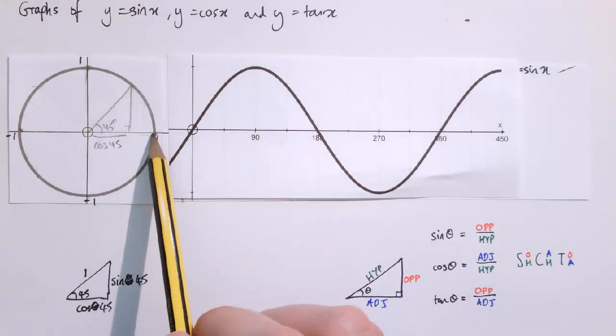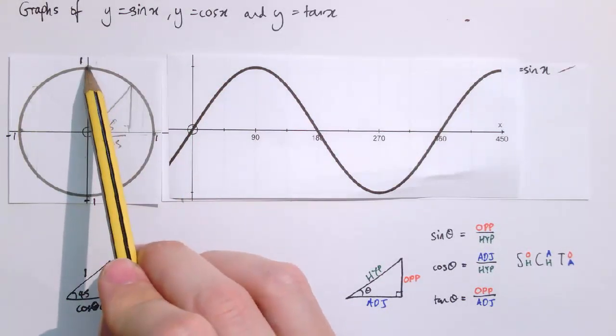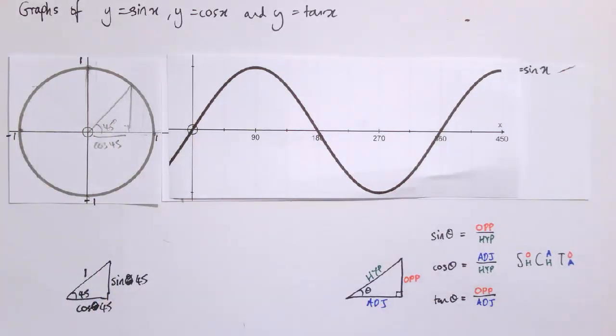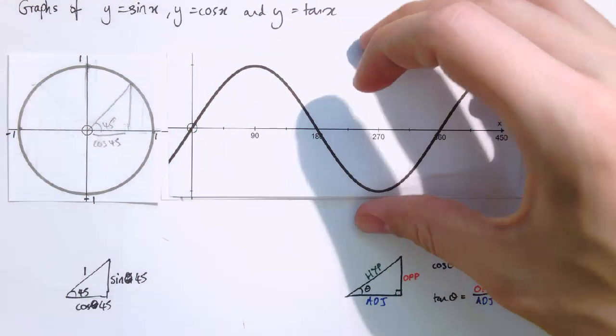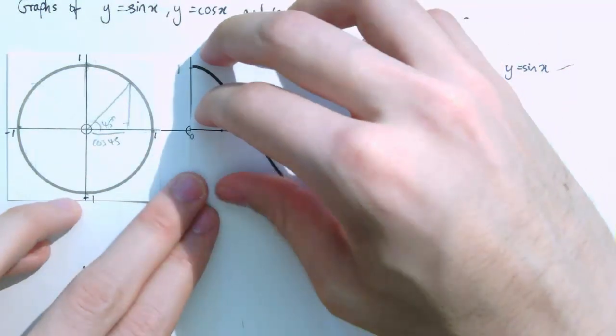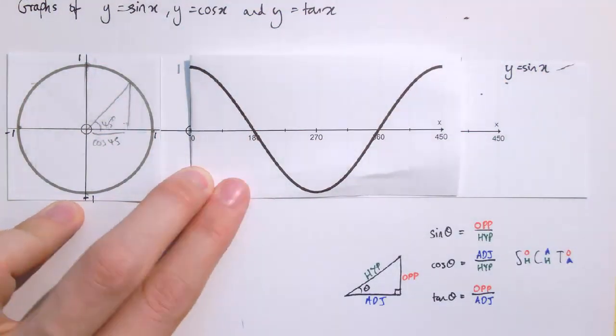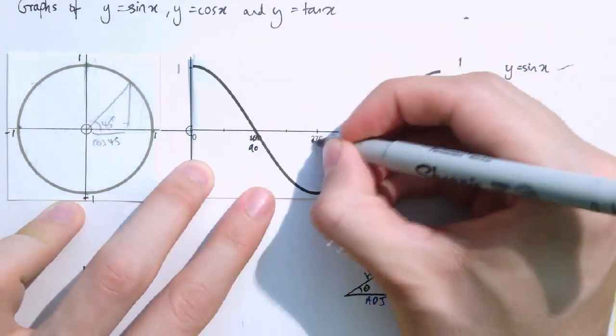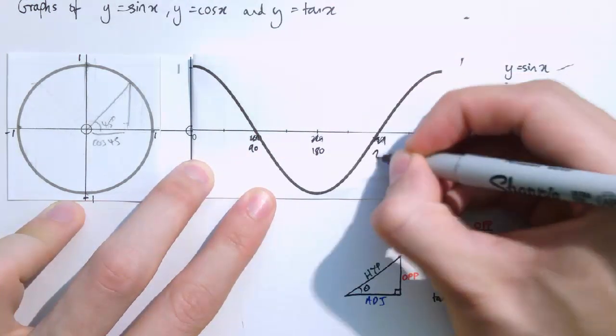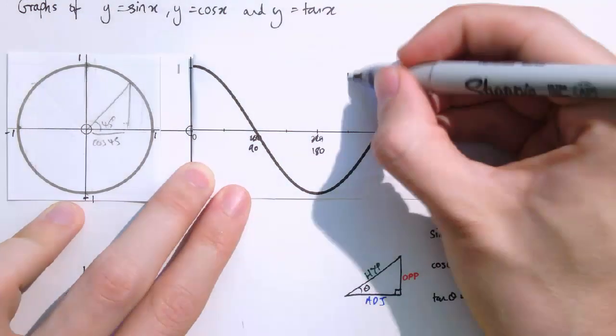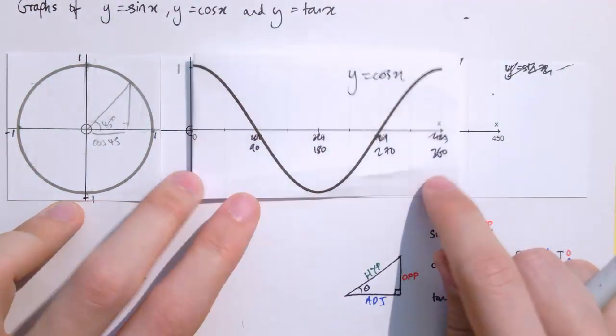So cos of 0 is 1. Cos of 90 degrees is 0 x-coordinate, so it's 0. Cos of 180 is minus 1. And actually the graph of cos looks very similar to the graph of sine. It's just it starts a little bit further over. So actually if I were to fold the page here at 90, and so instead of 90, that's 0. And then of course these values change. So that becomes 90, 180, 270, 360 and so on. We get the graph of y equals cos x.